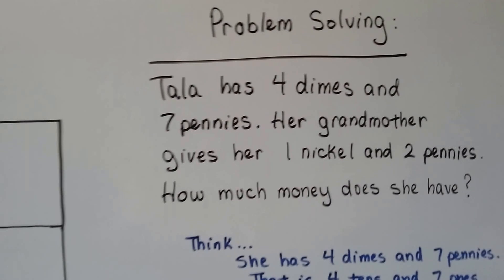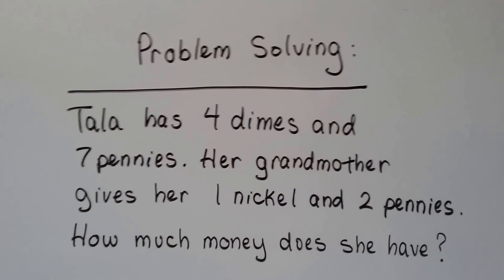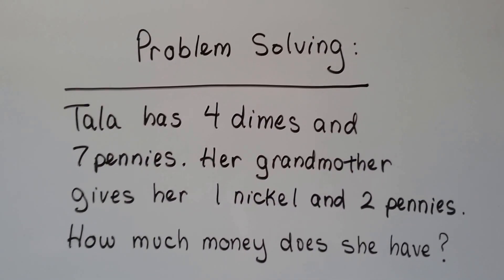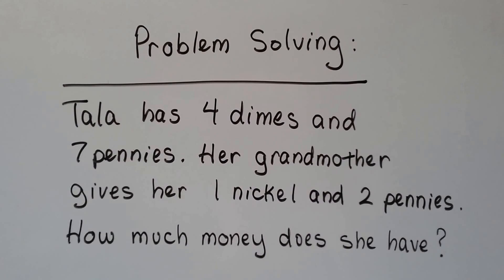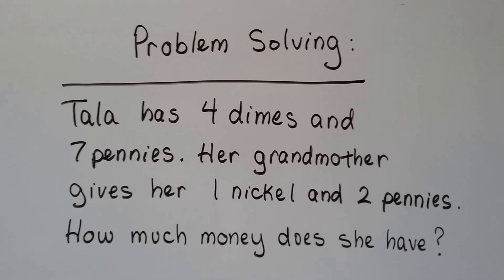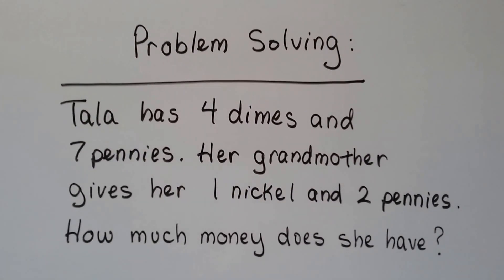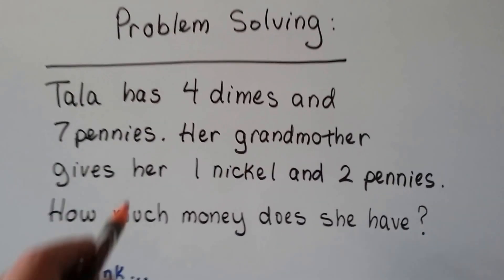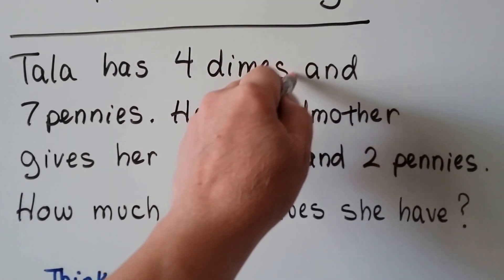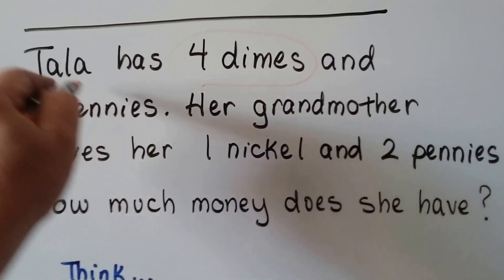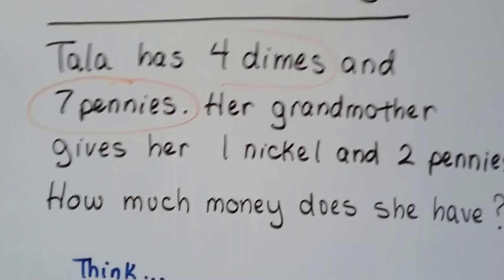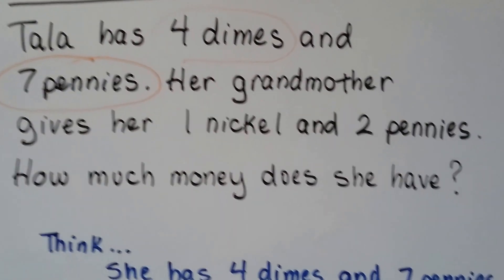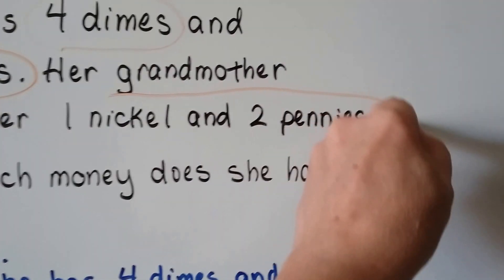Let's try problem solving. Tala has 4 dimes and 7 pennies. Her grandmother gives her 1 nickel and 2 pennies. So how much money does she have? So let's circle the important words. She has 4 dimes, right? And 7 pennies. That's important.